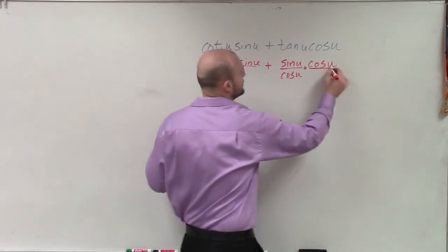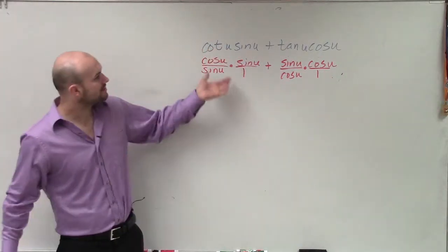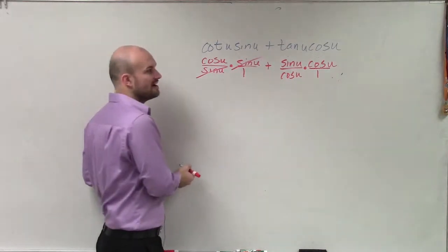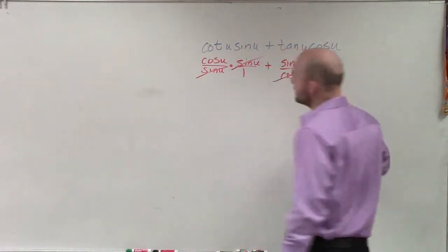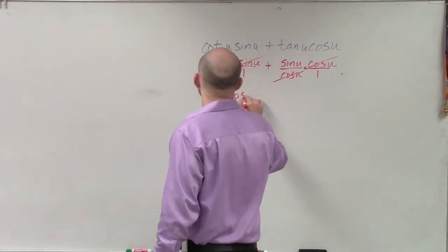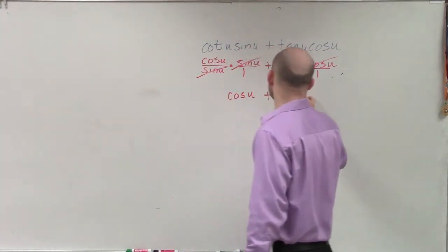Remember, these sines are in the numerator. The cosine's in the numerator. So therefore, I can see that these sines are now going to divide to 1, and the cosines are now going to divide to 1, leaving me with an expression which is cosine of u plus sine of u.